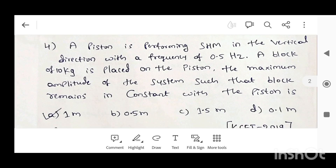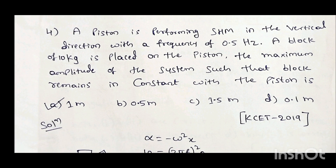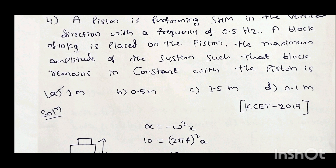Fourth question: a piston is performing SHM in a vertical direction with a frequency of 0.5 Hz. A block of 10 kg is placed on the piston. The maximum amplitude of the system such that the block remains in contact with the piston is: option A 1 m, option B 0.5 m, option C 1.5 m, option D 0.1 m. This question appeared in KCET 2019.